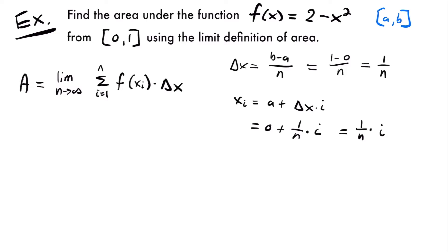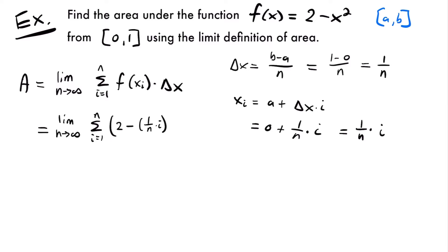The area equals the limit as n approaches infinity of the sum from i = 1 to n of f(x_sub_i). Our function is 2 - x², so plugging x_sub_i in gives us 2 - (i/n)², multiplied by delta x, which is 1/n.